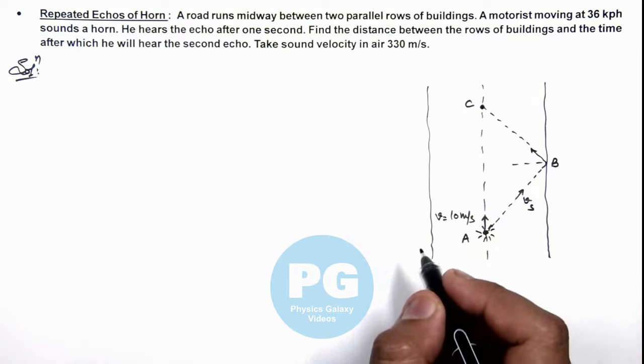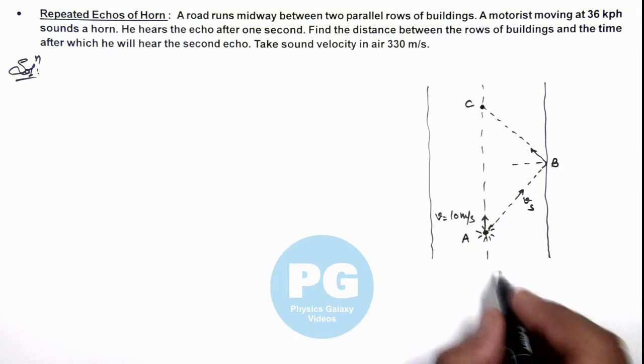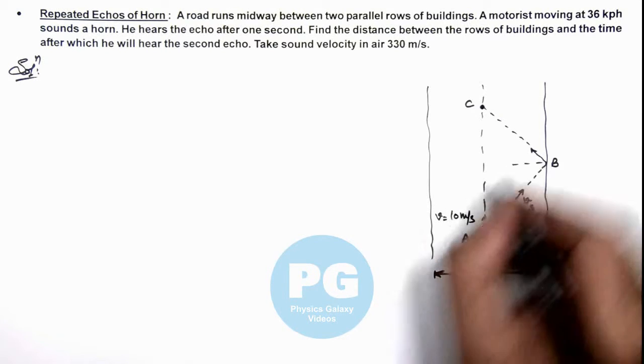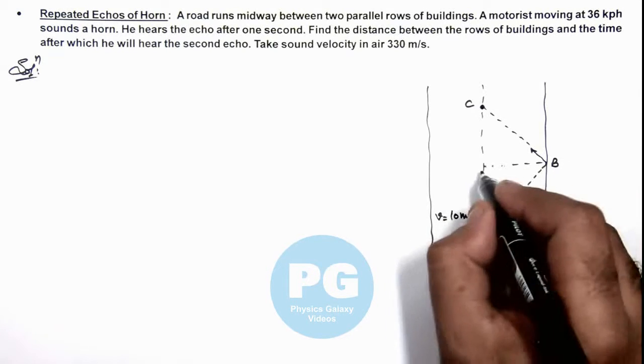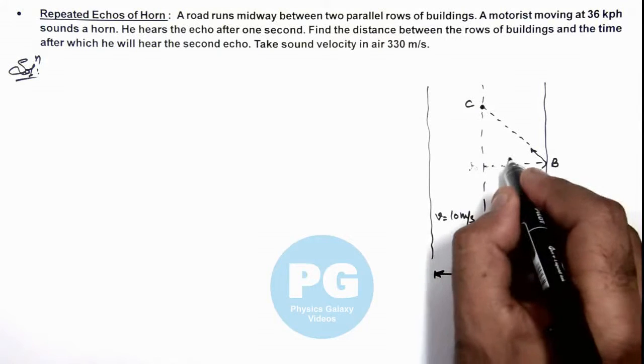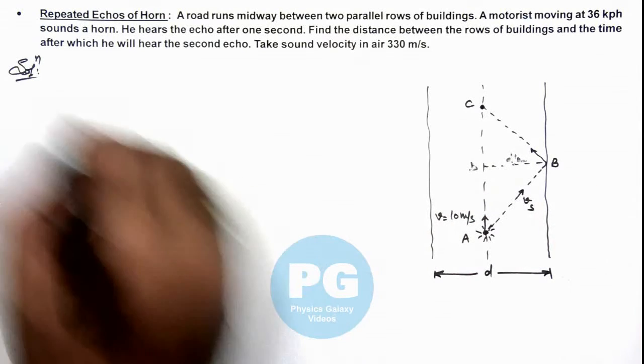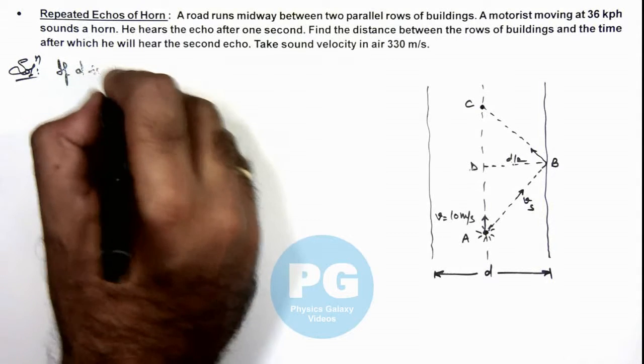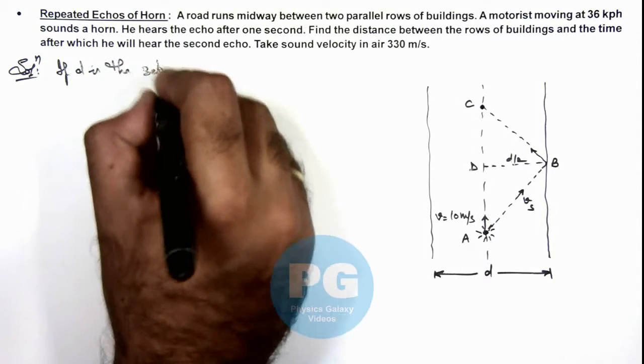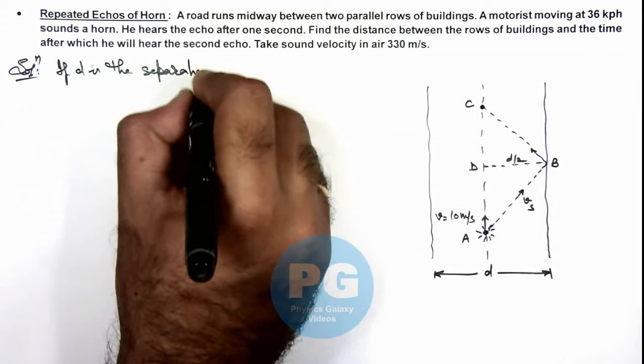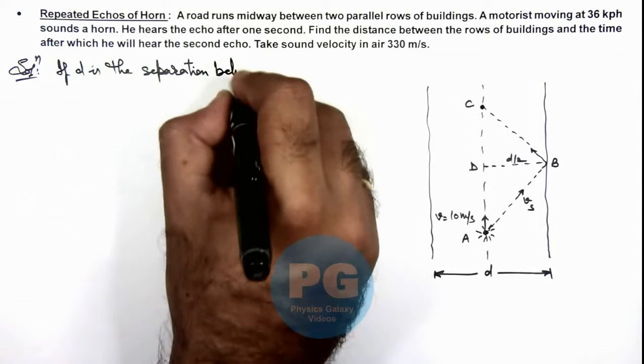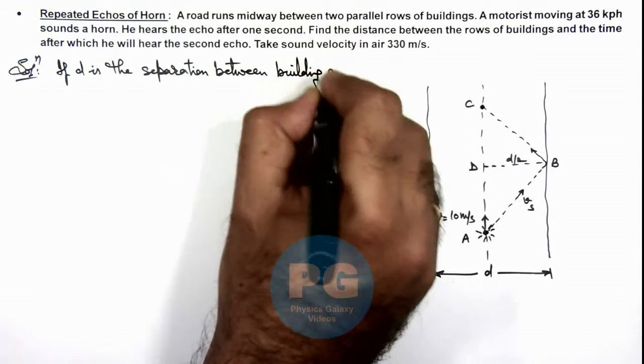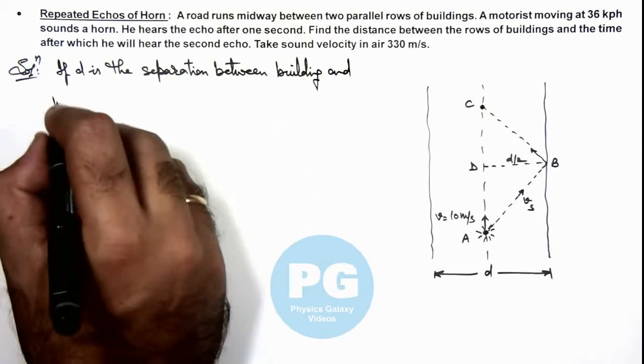Now in this situation we can say, if d is the separation between the two buildings, then here we can write, if this point is d then BD is equal to d/2. So here we can write if d is the separation between buildings and motorist.